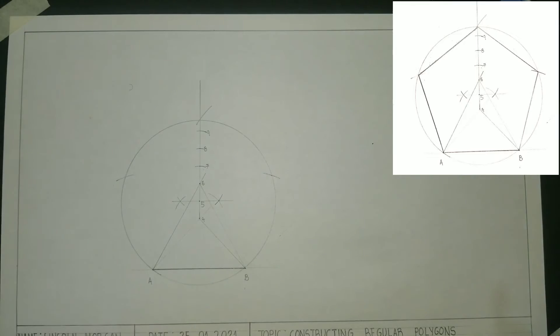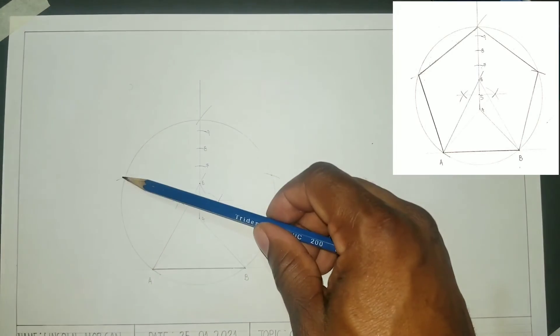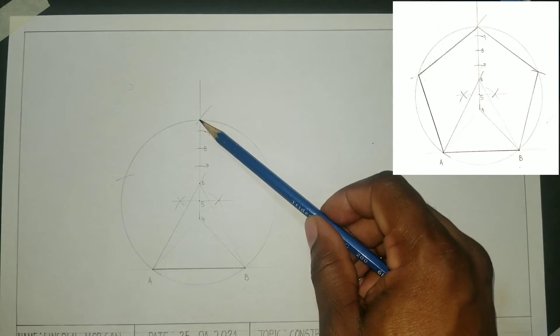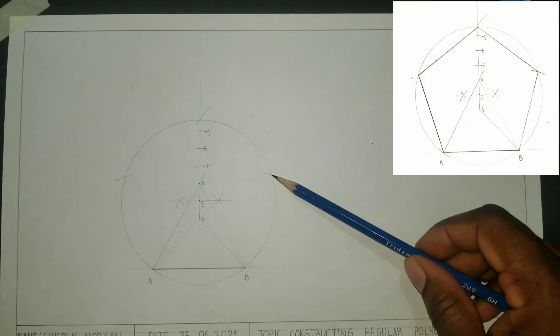From this intersection, we will scribe the final arc to cut the circle. The final step is to draw lines from A to this intersection, from here to this intersection, and from this intersection to this intersection.